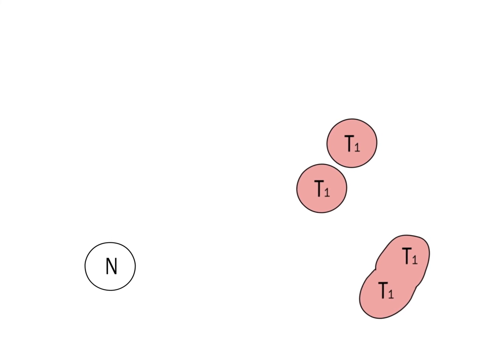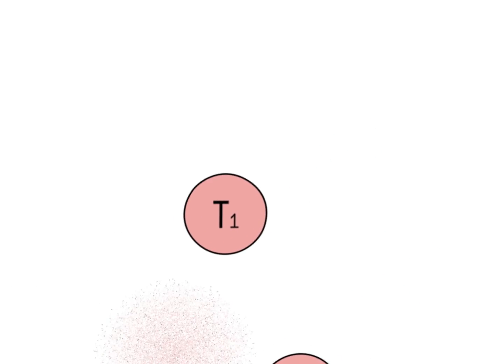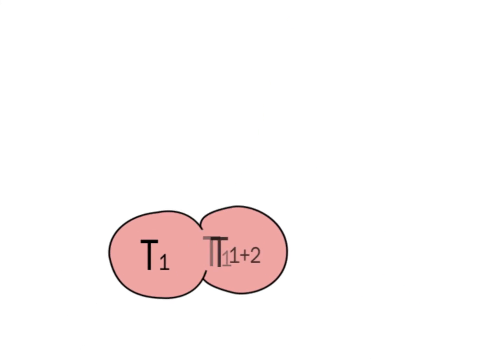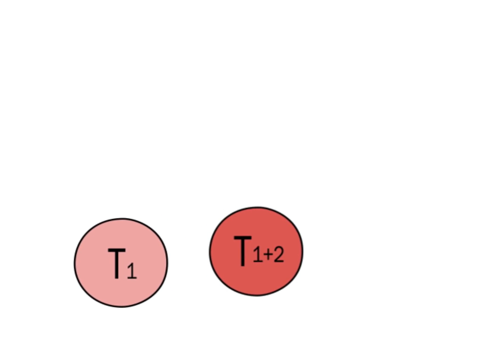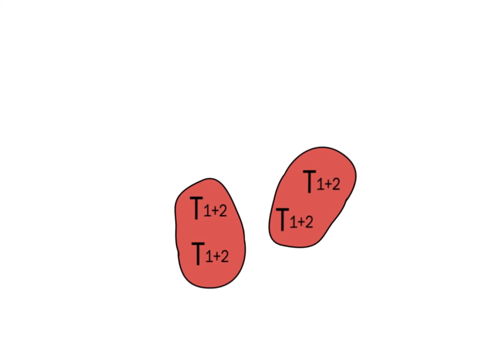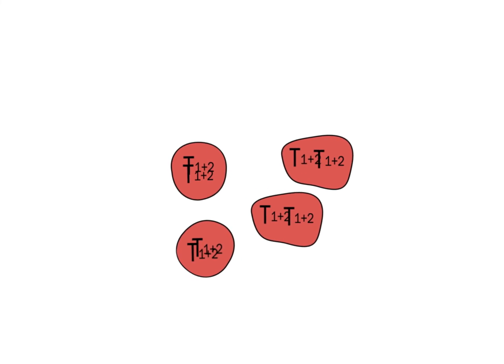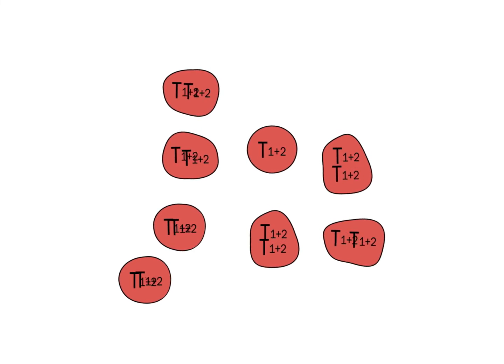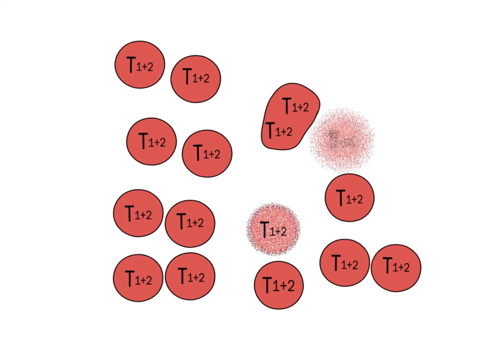One of the T1 clone cells is then hit randomly by a second event, generating the T1 plus 2 clone. The T1 plus 2 clone expands because of more cell divisions and less apoptosis. Consequently, the clone outnumbers the T1 clone.